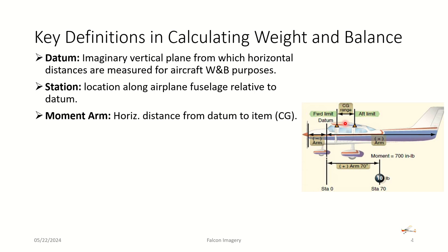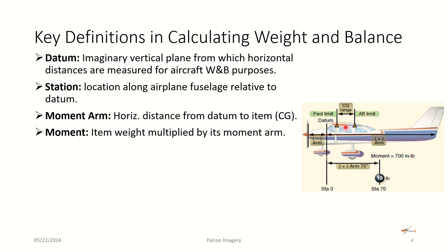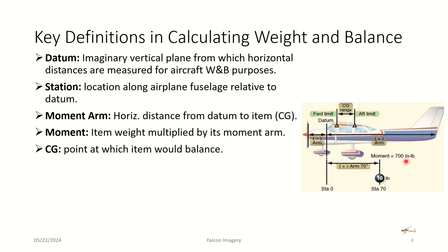Then we have the moment arm — the horizontal distance from the datum point to the center of gravity for a particular item, such as the pilot and front passenger, back passengers, baggage, and fuel. The moment is the weight of a particular item multiplied by its moment arm. In this example, we have a station identified as 70, meaning 70 inches away from the datum. There is a 70-inch moment arm and the weight at that point in the baggage area is 10 pounds. To calculate the moment, we multiply 70 inches times 10 pounds and get 700 inch-pounds. The center of gravity is the point at which the item would balance — if we could balance the aircraft on our finger so it wouldn't tip forward or backwards, that would be the CG point based on the weight and position of those weights in the aircraft.